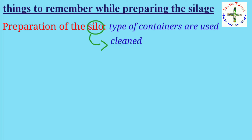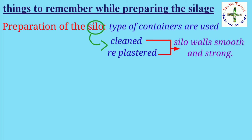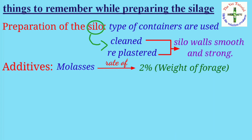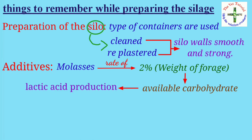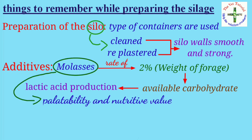Fifth is preparation of the silo. Several types of containers are used as silos; the silo should be cleaned and re-plastered to make the walls smooth and strong. Regarding additives, molasses at the rate of two percent by weight of forage provides readily available carbohydrates necessary for increasing lactic acid production by Lactobacillus.